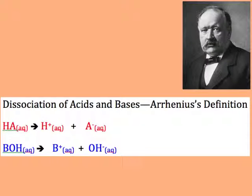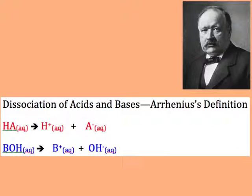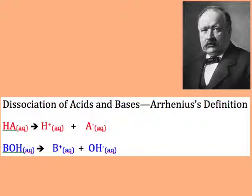Bases, on the other hand, are substances that, when they dissociate in water, form OH⁻ — or hydroxide ions. So a base is a substance that, when dissociated in water, produces hydroxide ions. That is essentially the definition that Arrhenius came up with.